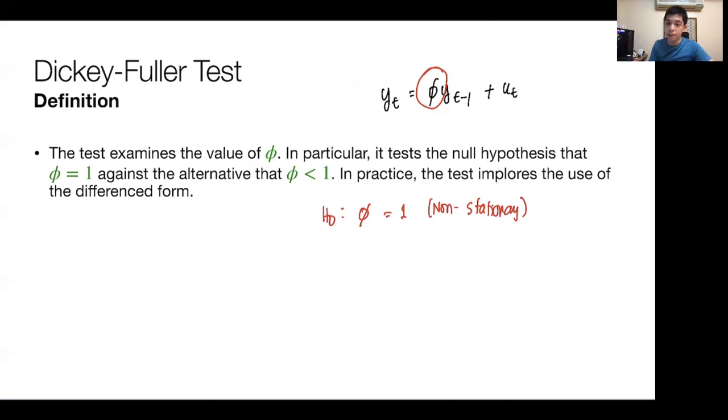Because if phi equals 1, as we mentioned in Wold's Decomposition Theorem and our discussions on random walks, that imputes a non-stationary series. However, if the alternative is chosen and phi is less than 1, then clearly this is a stationary series.